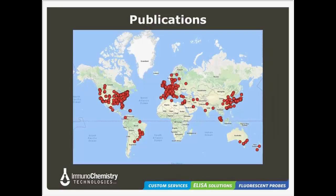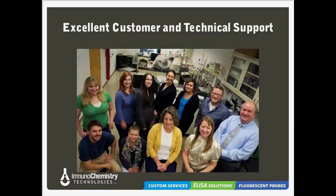If you're looking for more examples of our cell viability assay kits in use, or any of our other ICT products, we do have an extensive list of publications where our products are cited. As you can see from this publication map, we have thousands of publications from researchers all over the world. If you're looking for specific examples of our products in use, feel free to send me an email — I'd be happy to conduct a publication search for you. One of our points of pride here at ICT is our excellent customer and technical support. Being a small company, you can frequently speak to the inventor of the product to get your questions answered. We also offer fast and affordable shipping, quickly sending out orders the next day.